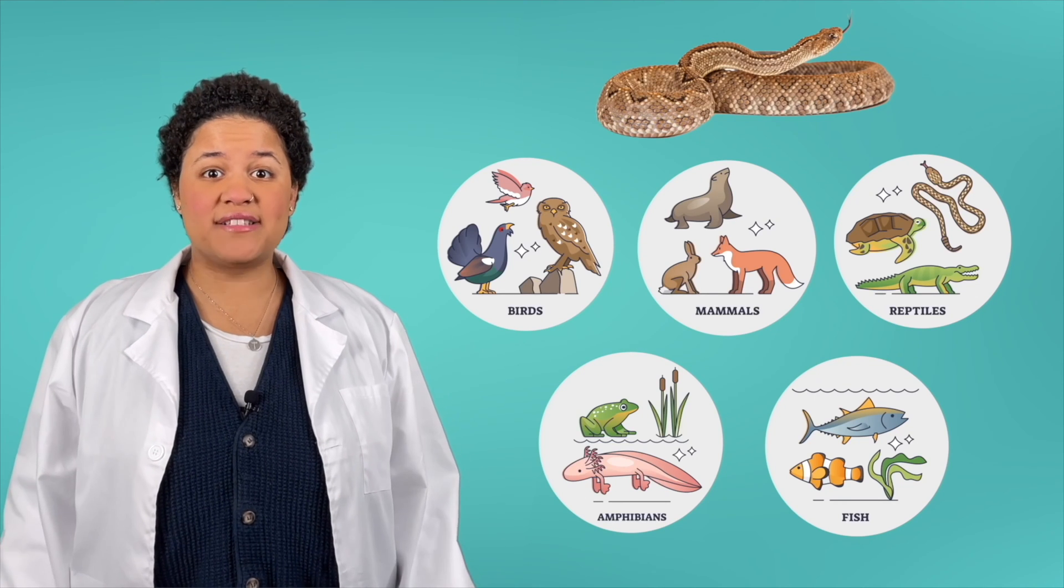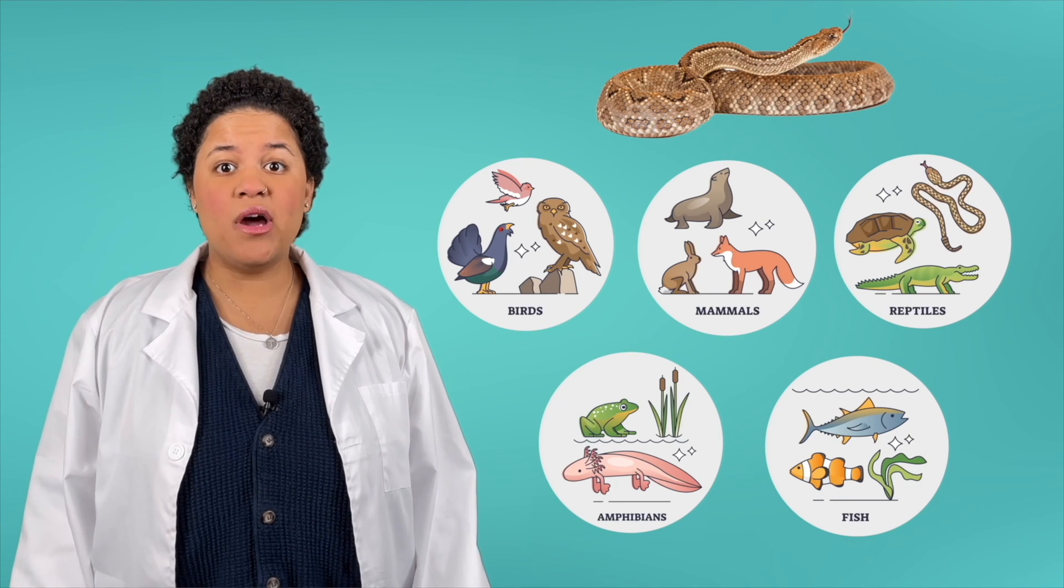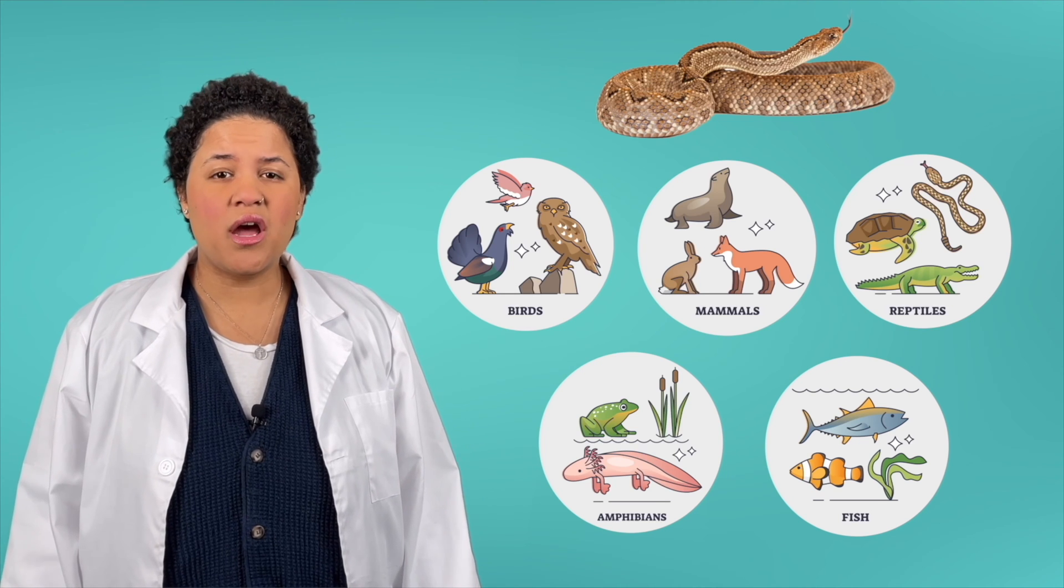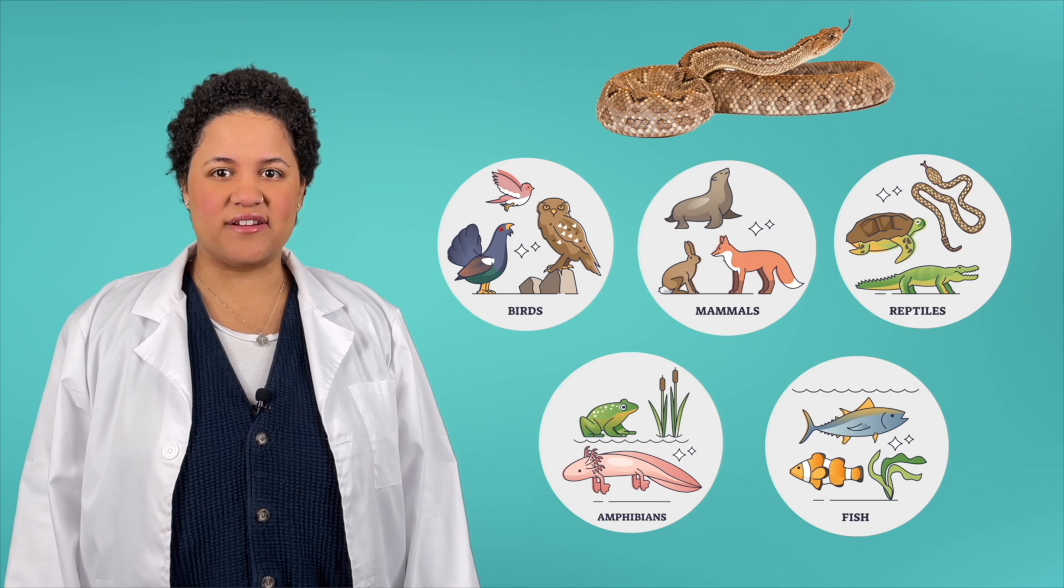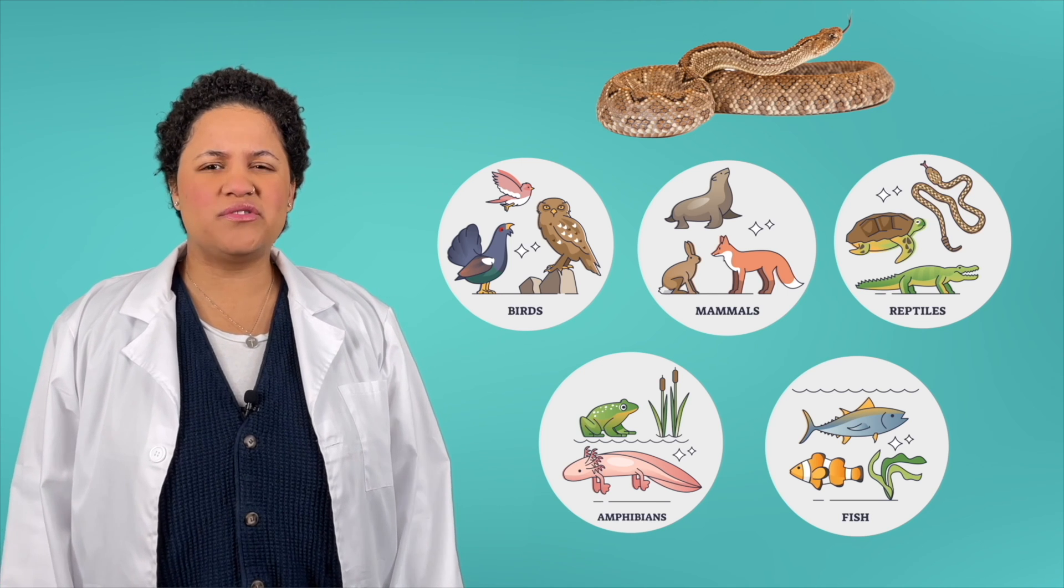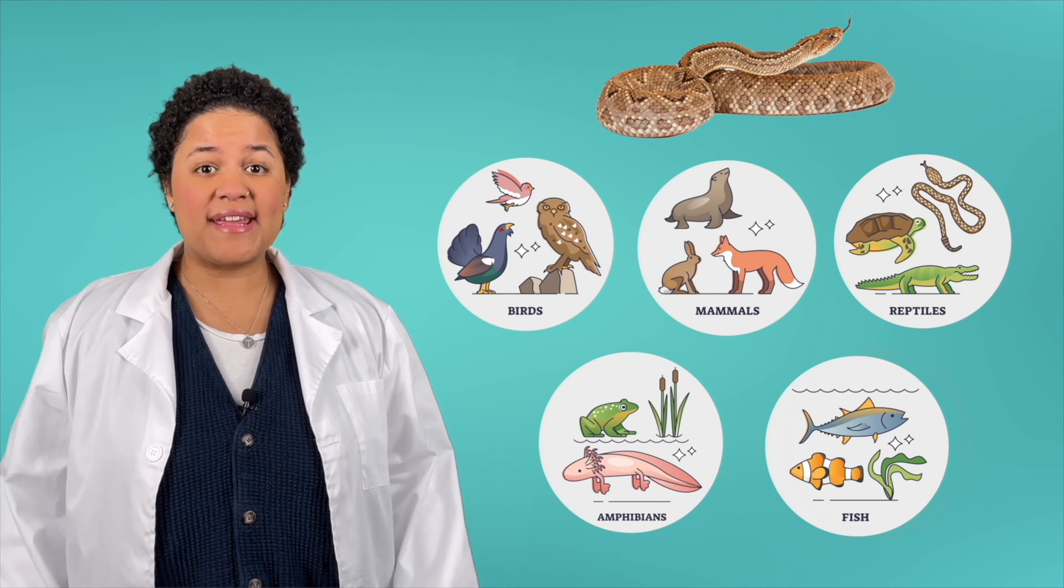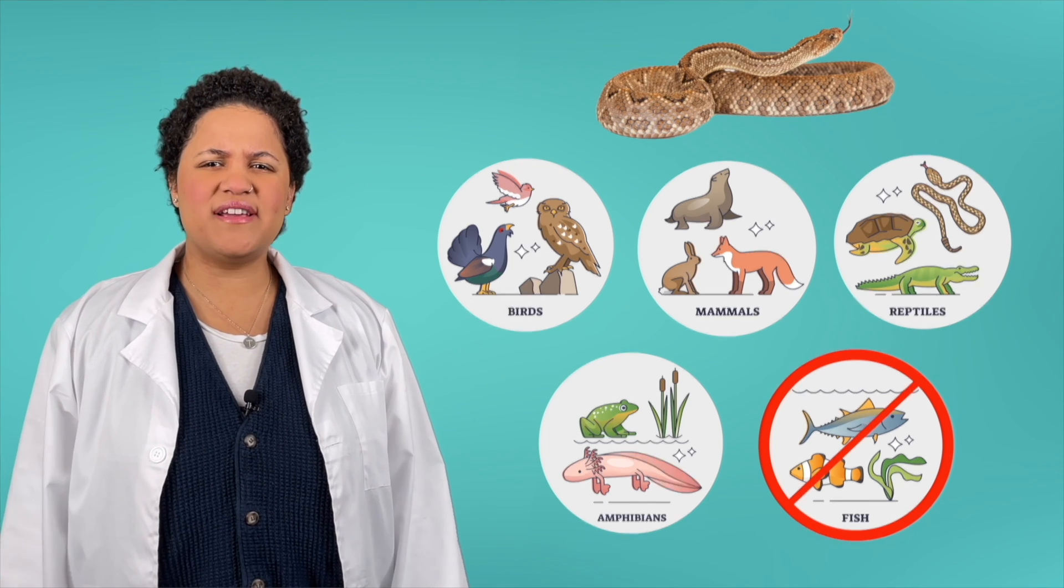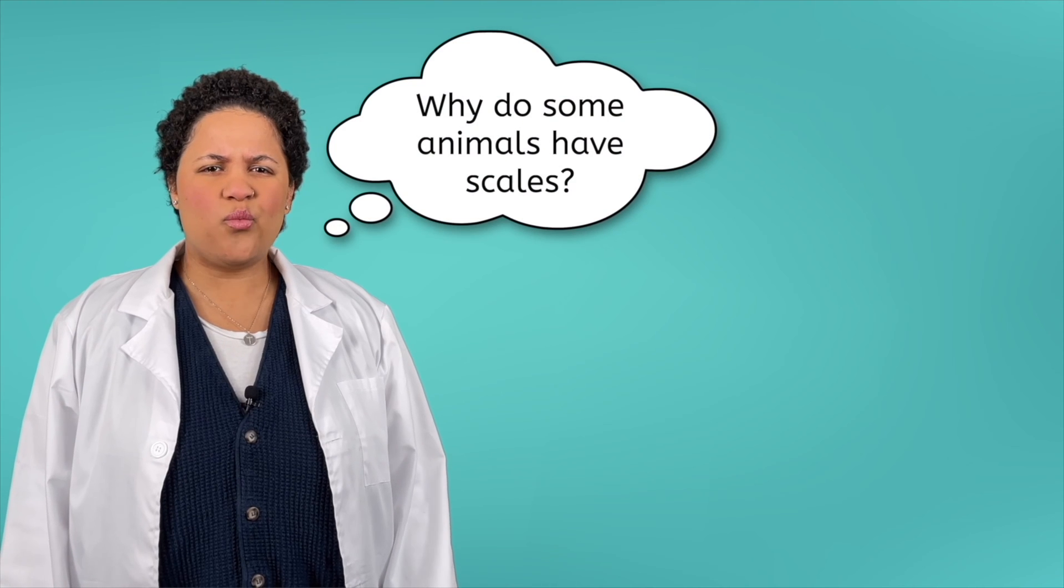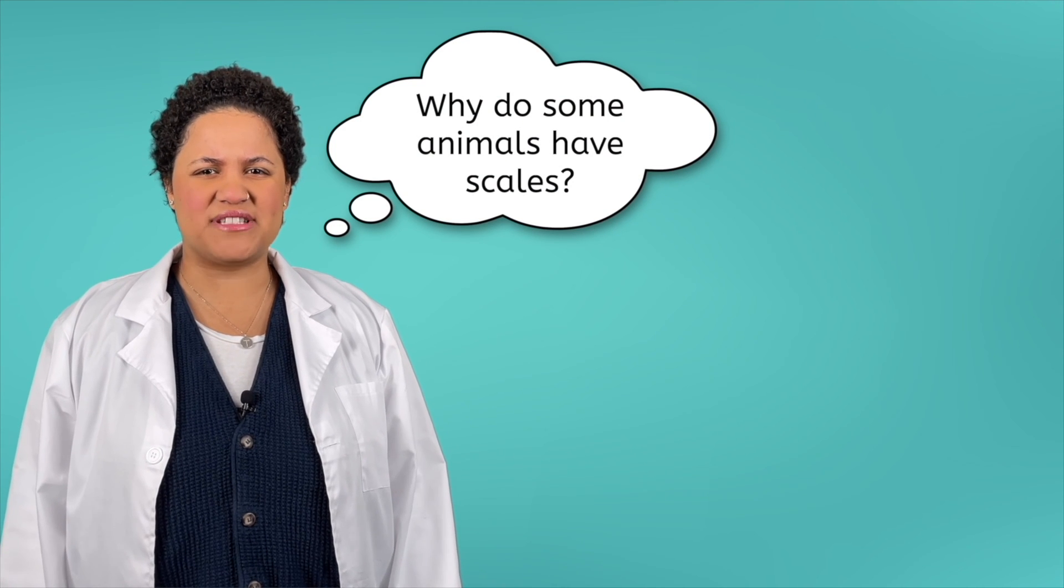Okay scientist, you've got to help me out because I'm so confused. I know that fish have scales and this snake's body has scales on it, but this animal doesn't have gills so it can't be a fish. If it's not a fish, what is it and why do some animals have scales?